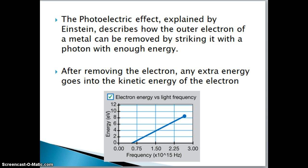Einstein explained the photoelectric effect and it shows how the outer electron is removed. If I have any extra energy after I've knocked out the electron, that energy goes into kinetic energy of the electron. So if there's a big photon it knocks it out and then the electron has lots of energy.